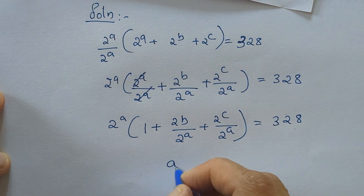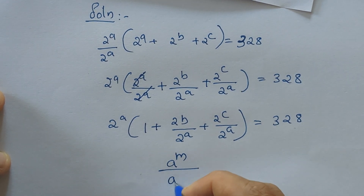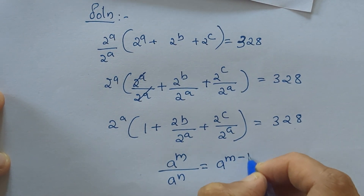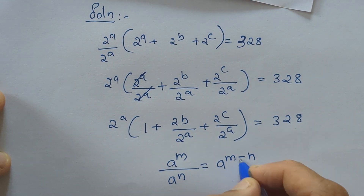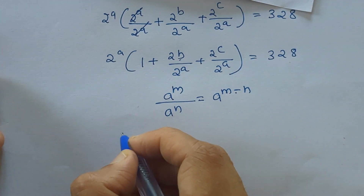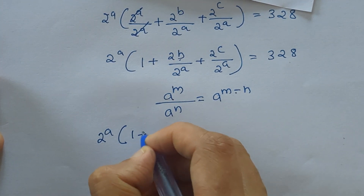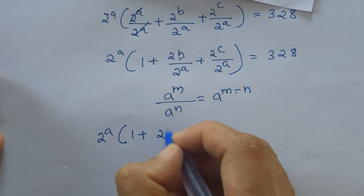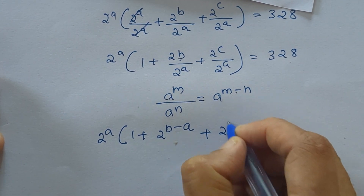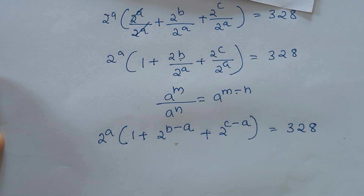We know that A raised to M divided by A raised to N equals A raised to M minus N. Applying this here, we get 2 raised to A into 1 plus 2 raised to B minus A plus 2 raised to C minus A equal to 328.